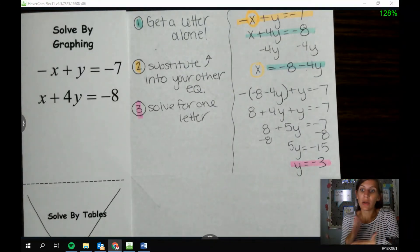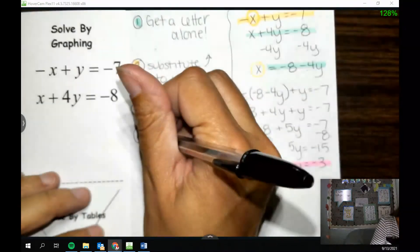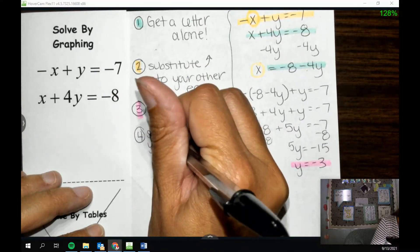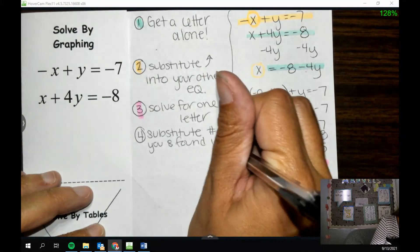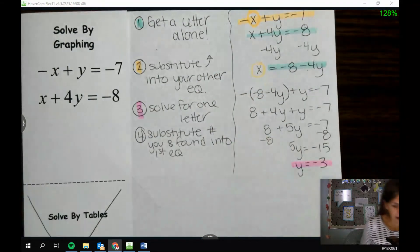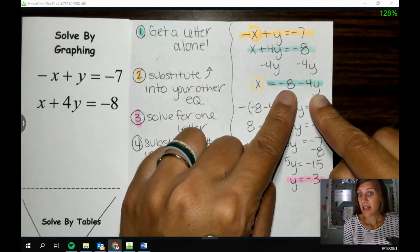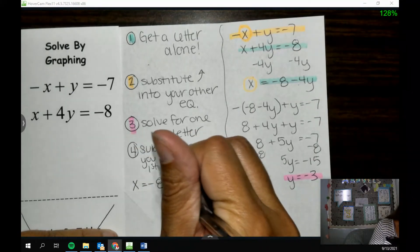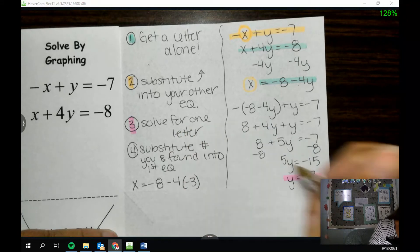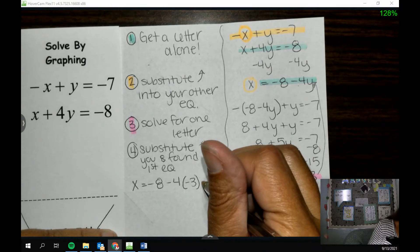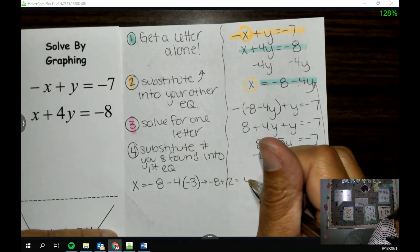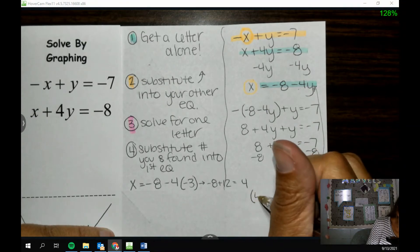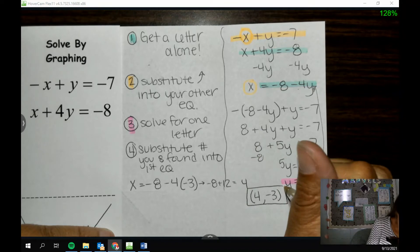So we solved for one letter by doing this whole process here and getting y equals negative 3. That's only half done though because we're trying to solve for x and for y. And so the last step is we want to substitute one more time. So substitute the number you just got into the first equation. Really wherever, but if I go back to that first equation that I made, it's kind of easier because x is already alone. So if we take that, x equals negative 8 minus 4, but in place of y, I put negative 3 because I know that it is. Like I just solved for that. I end up with negative 8 plus 12, so 4. And then kind of the best way to write your answer is as an ordered pair. So like x comma y, so 4 comma negative 3 would be my final answer there.